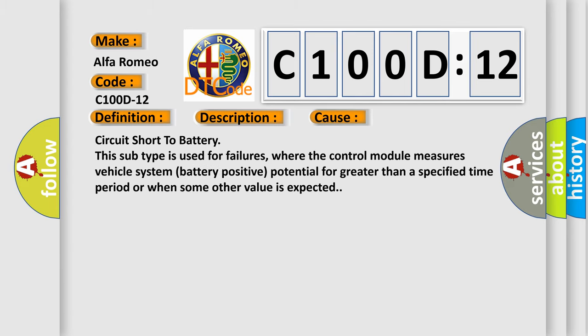This diagnostic error occurs most often in these cases: circuit short to battery. This subtype is used for failures where the control module measures vehicle system battery positive potential for greater than a specified time period or when some other value is expected.